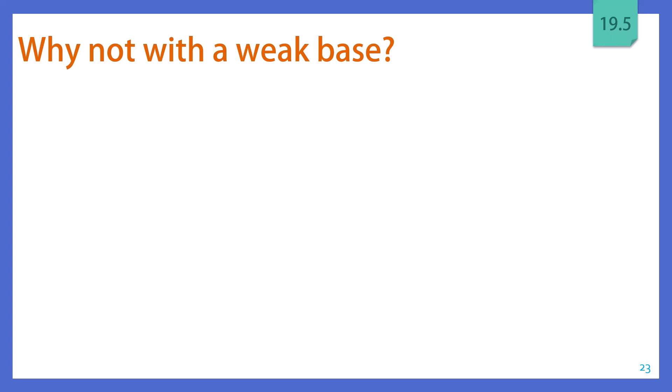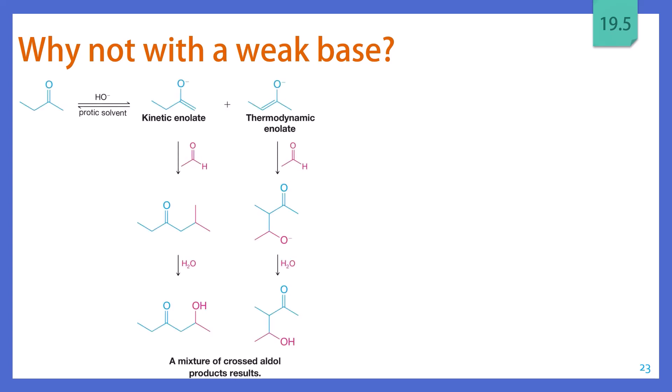But you may be wondering, why can I not do this with a weak base? And the reason is actually pretty simple. It's because of that equilibrium. Once you introduce a weak base, you're going to be in an equilibrium between the kinetic enolate and the thermodynamic enolate. So even assuming that these enolates do not go back and react with 2-butanone, which they probably would, you would still end up with 2 possible enolates in your reaction mixture. So that when you finally do add in your intended target aldehyde or ketone, you're going to end up with a mixture of crossed aldol products.